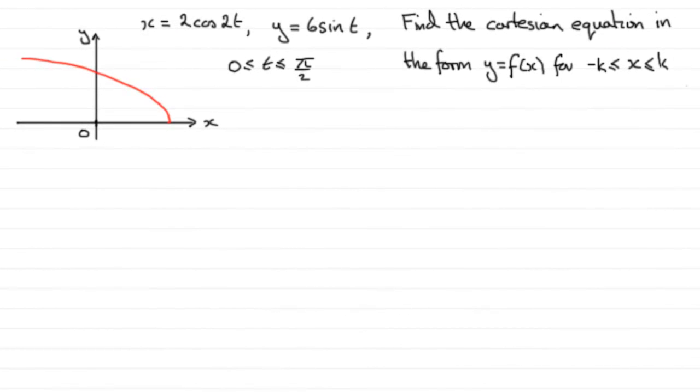Now in this part of the question, we've got to find the Cartesian equation and express in the form y equals some function of x for this parametric equation here. And it's also valid for x greater than or equal to minus k but less than or equal to k. And we've got to establish what k is.